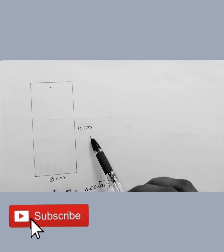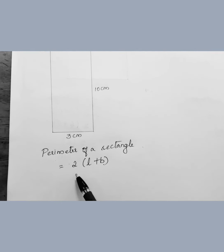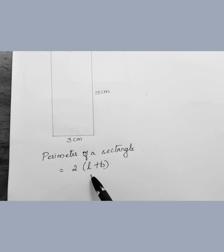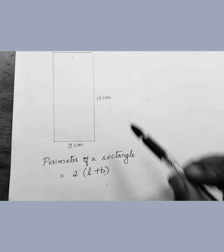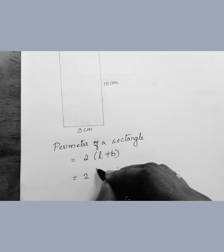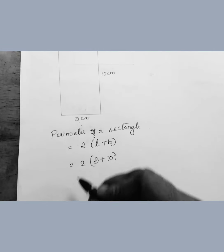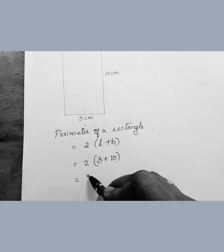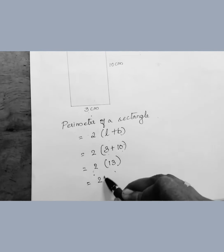Now, look at this one. The length is 3 centimeters and the breadth is 10 centimeters. Shall we find the perimeter of this rectangle? Perimeter of a rectangle is equal to 2 into (L plus B). L is 3 and B is 10. So 3 plus 10 is 13, and 2 times 13 is 26 centimeters. Using this formula, we can find the perimeter of any rectangle of any length.